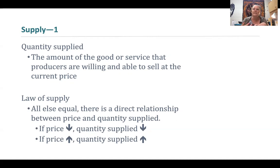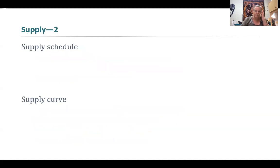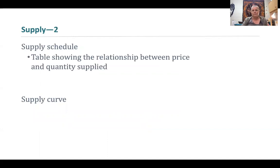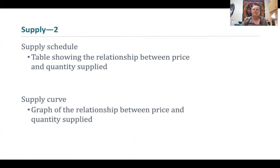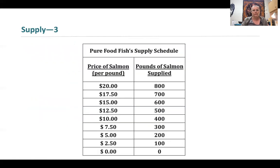When we say prices go up or down, we're talking about the price you sell the product for on the market. Behind the scenes is the assumption that input costs are the same — they're unmoving. A supply schedule is simply the table that shows us the relationship between price and the quantity that will be supplied. When we graph these points as ordered pairs, that gives us the supply curve.